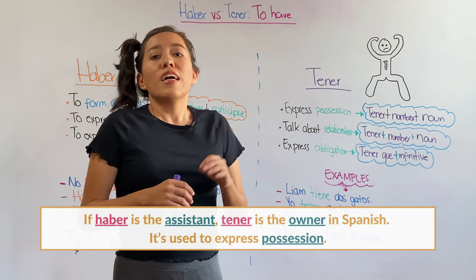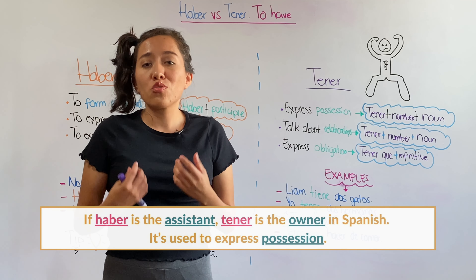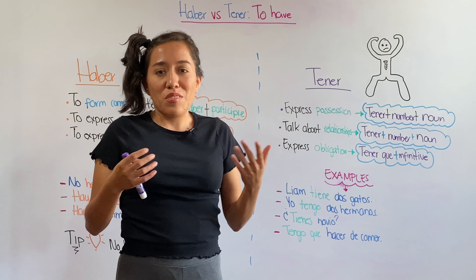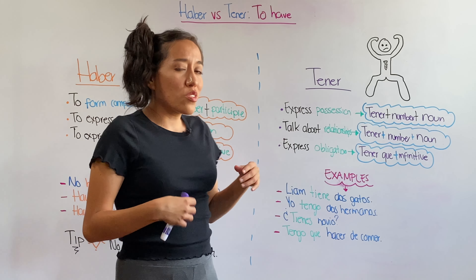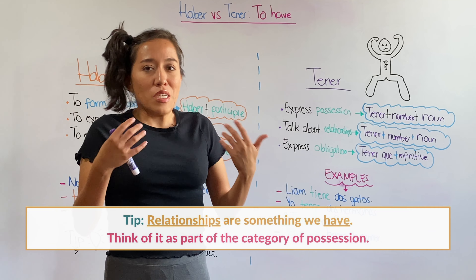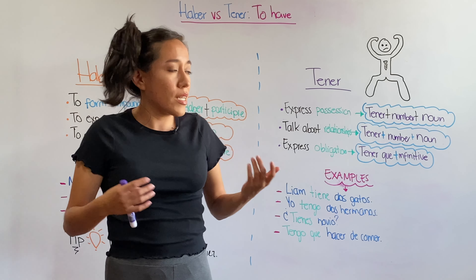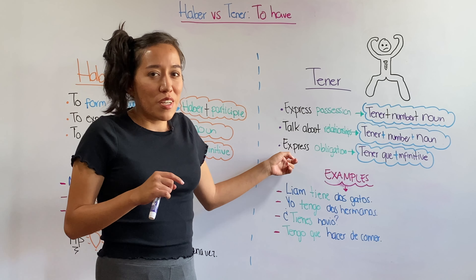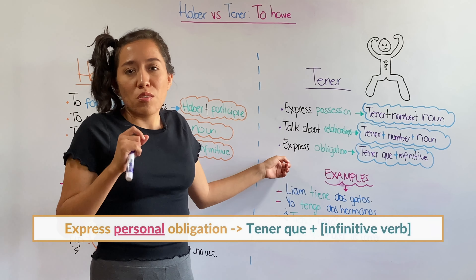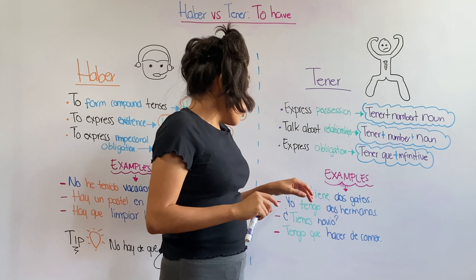If haber is your assistant, tener is the owner. Tener owns everything that it touches, and because of that you're going to use it to express possession and talk about your belongings. The structure is tener plus a number plus a noun. You're also going to use tener to talk about relationships, following the same structure. And you're also going to use tener to express obligation, with the structure 'tener que' plus an infinitive verb.